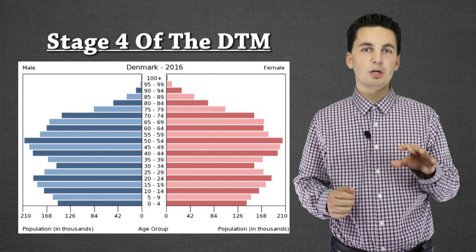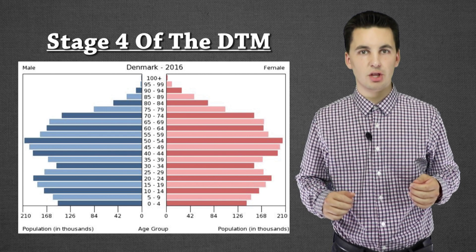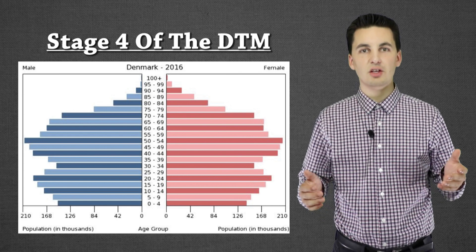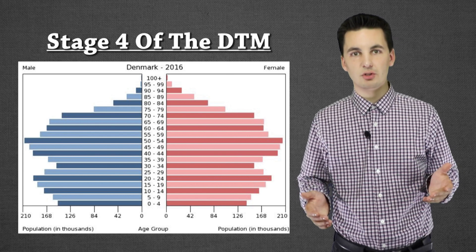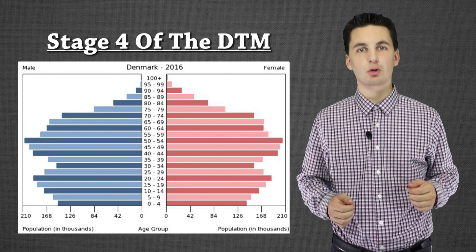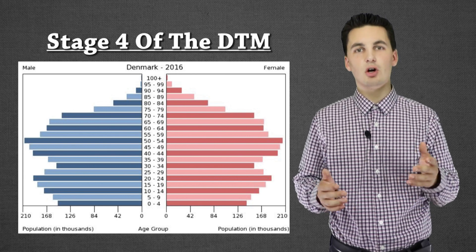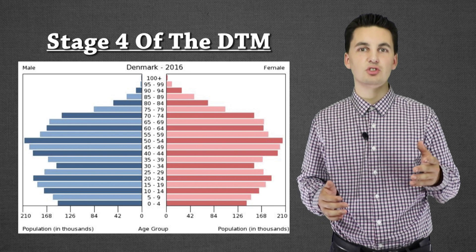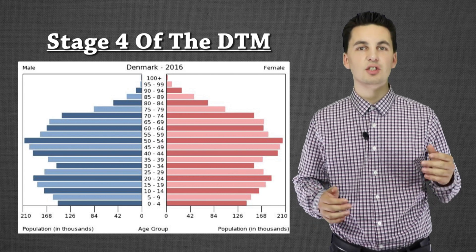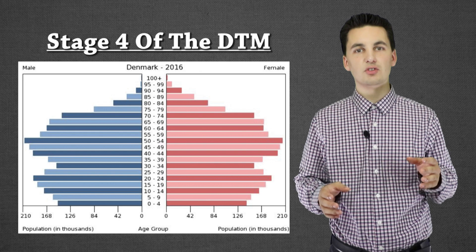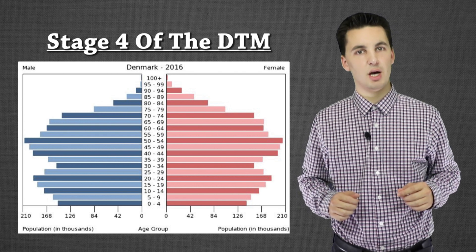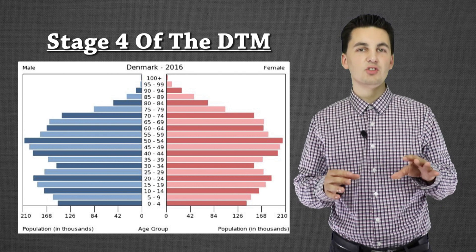Stage four can result from government control, but more often it's because of increased urbanization and women taking on more roles in society. When women have more roles, they have less time to have kids. As more women in the United States, for example, took on leadership roles, formed careers, graduated college, and played a more active role in society, they decided to have fewer children. As gender roles shift and people pursue their own goals, we see changes in population growth rates.